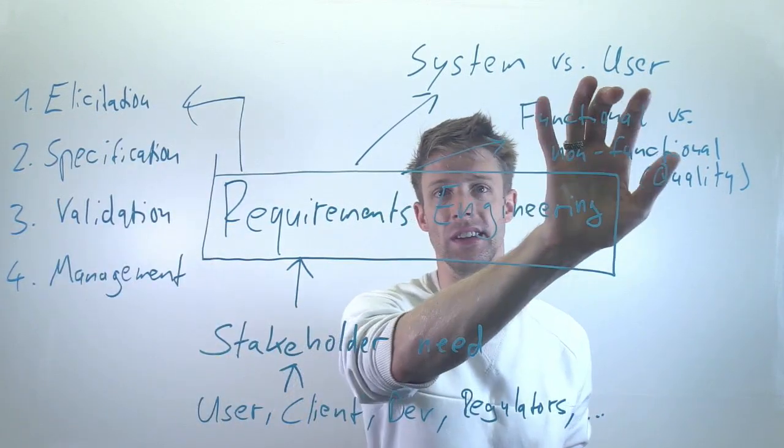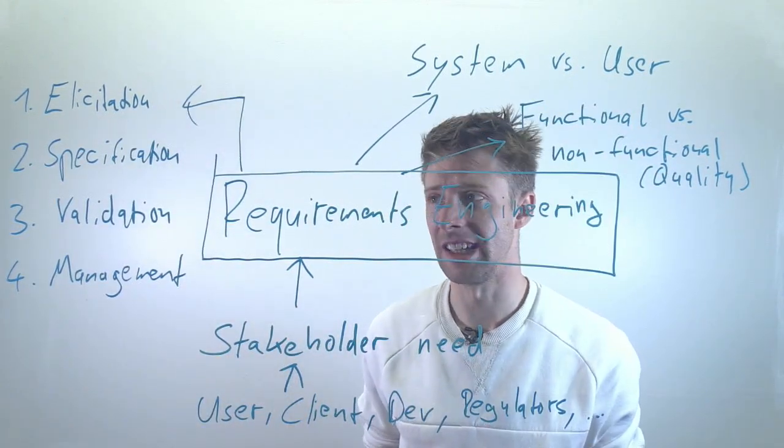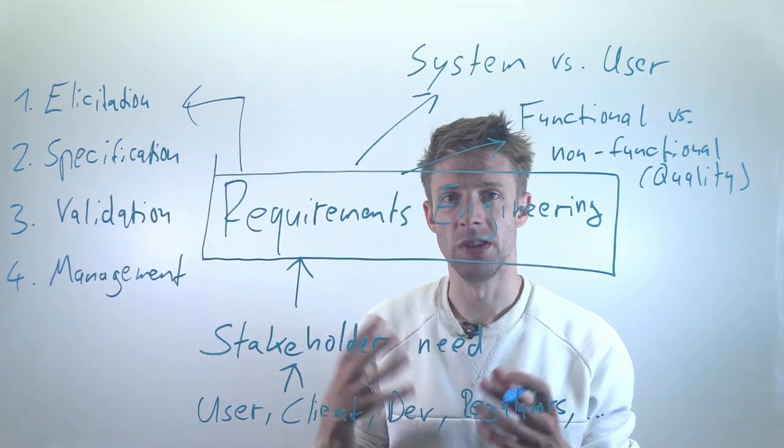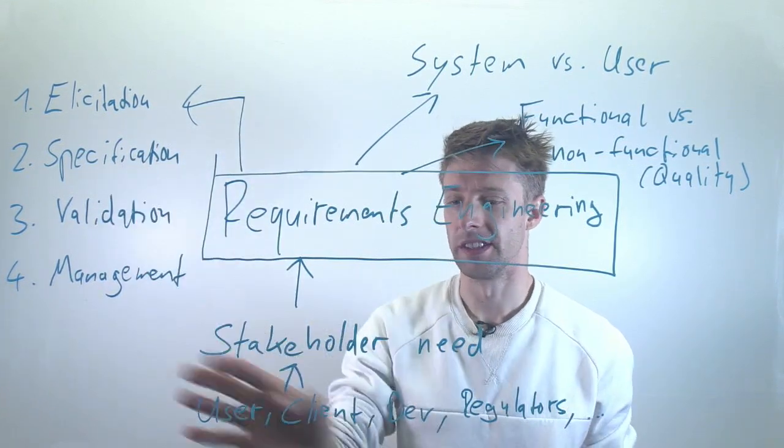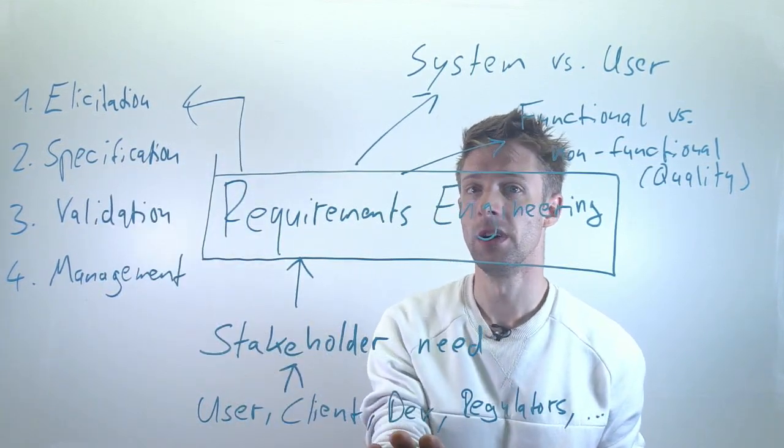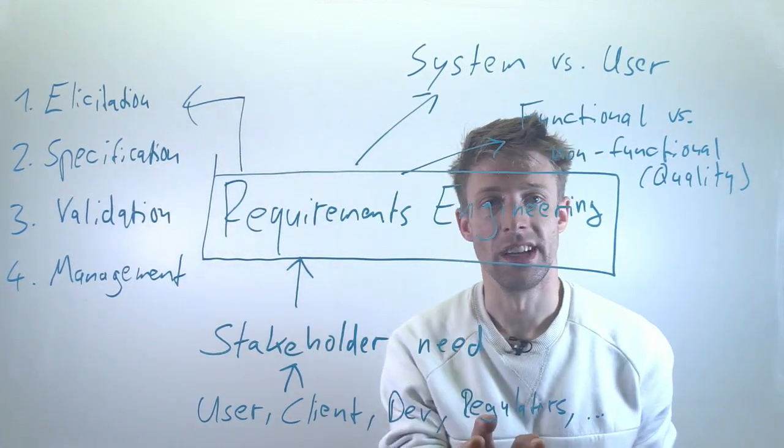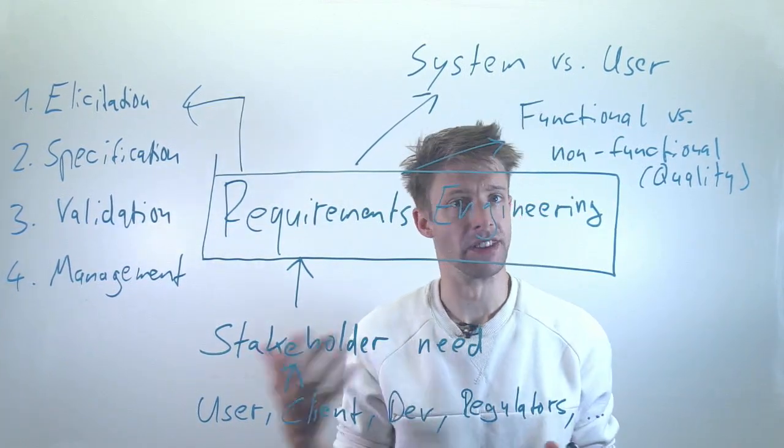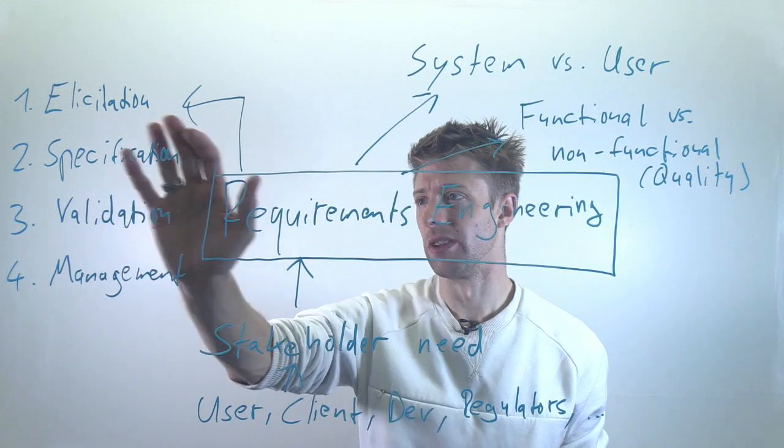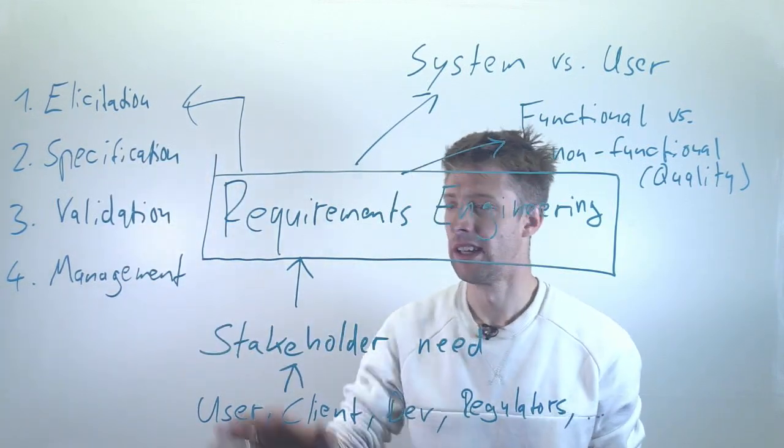Specification is about formalizing, writing down the requirements. So for example, you might have figured out by looking at a user that they would like to be able to use voice commands. The question is, how do you document that, so that for example the developers later on know what to do, or the regulators later on can see that you have done this in the right way. So it's a lot about how to write requirements.